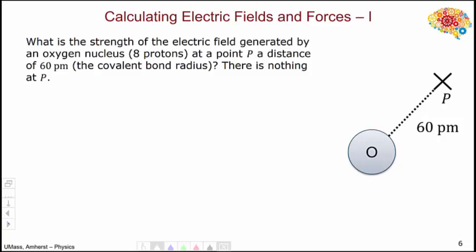Let's move on and actually try to use this expression for calculating electric fields and forces. What is the strength of an electric field generated by an oxygen nucleus, which has 8 protons, at a point P a distance of 60 picometers, the covalent bond radius? There is absolutely nothing currently at point P. We're going to ignore the effects of the surrounding electrons and just think about the nucleus. We begin with our definition for the strength of the electric field. The charges within the nucleus are generating this field. Inside the nucleus, we have 8 protons, so we have 8 times the charge on each proton, giving us a total charge of 1.28 times 10 to the minus 18 Coulombs.